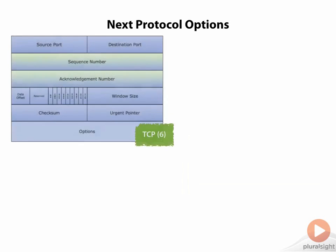As far as next protocol options go, if we look here, this is a TCP packet — or technically this is looking at a TCP header. And so in our IP header, the protocol field would point to protocol number 6, which would tell us that this is the next header we would expect to see in the sequence.